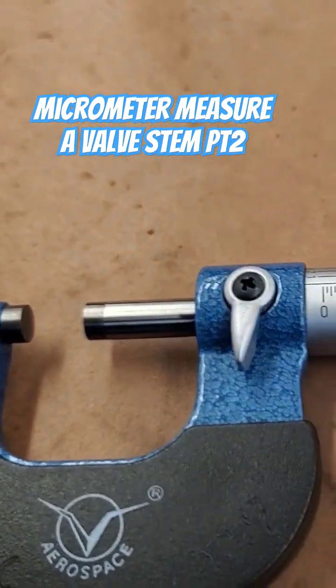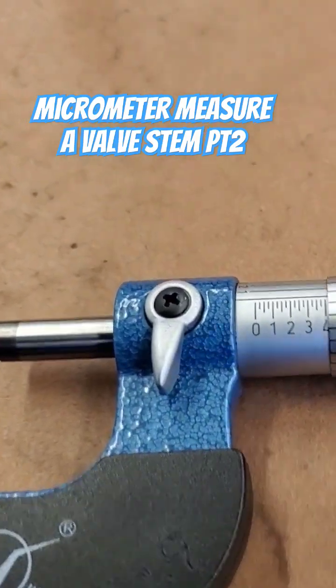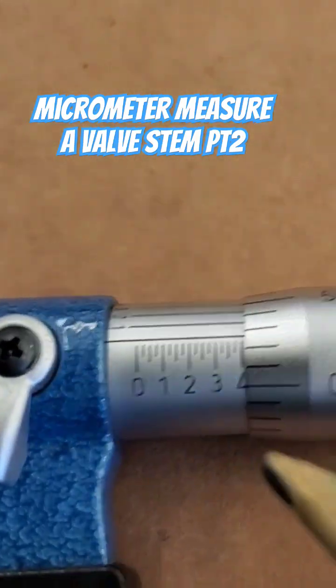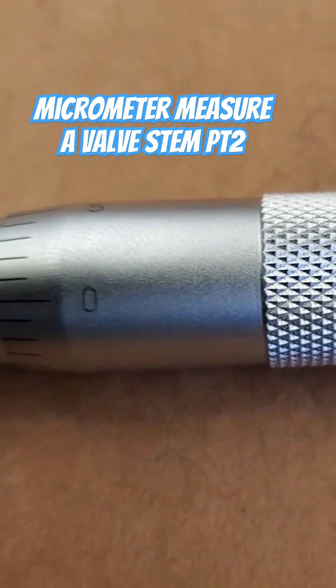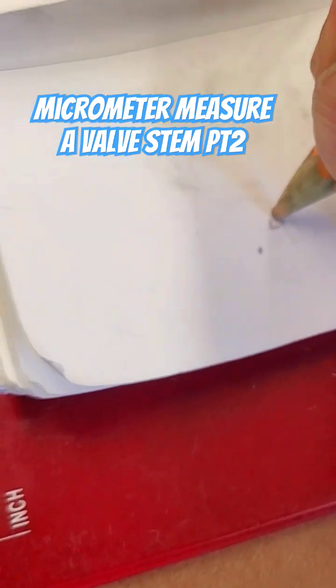Now what you want to do is start getting the readings, all the measurements. So it looks like the line is close to passing the 0.4 line which I put right here, 0.4.